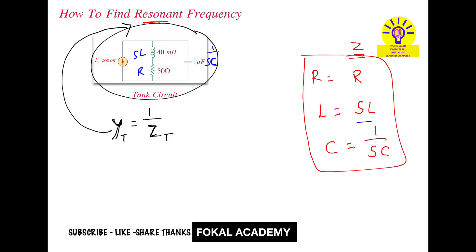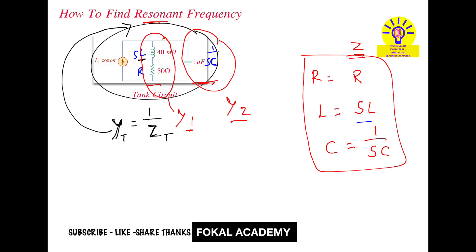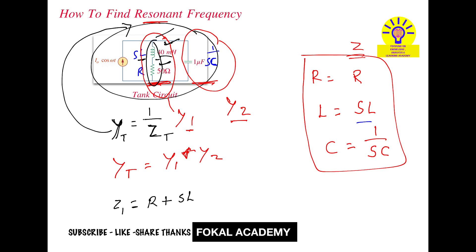Instead of finding overall impedance directly, we use a different method. When two branches have admittances in parallel, the overall admittance equals the sum of the individual admittances. Let Y1 be the admittance of the first branch and Y2 be the admittance of the second branch. Since they are in parallel, Yt = Y1 + Y2. To find Y1, first find Z1, the impedance of that branch. Since the inductor and resistor are in series, Z1 = R + SL.